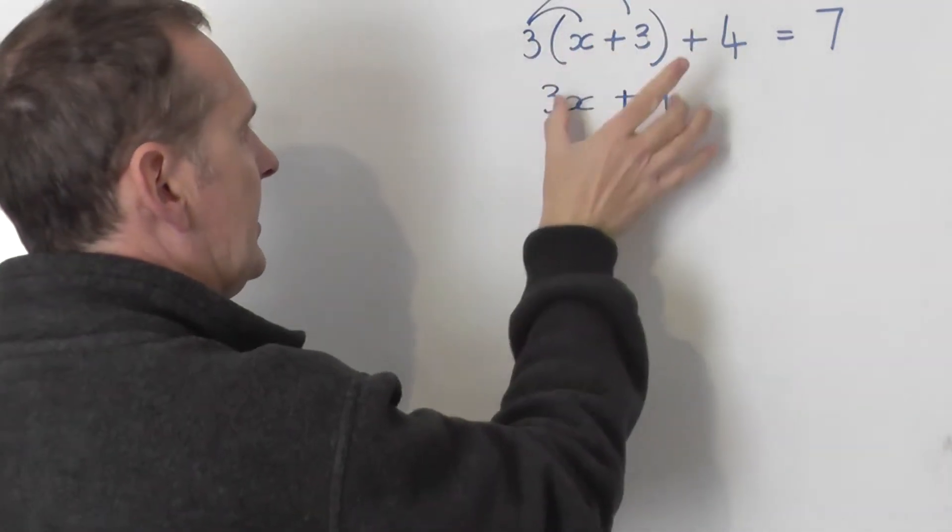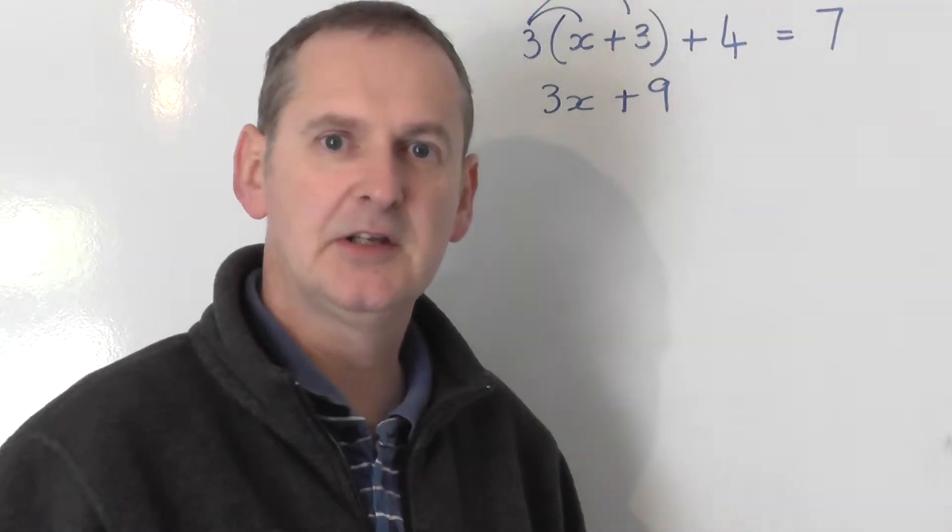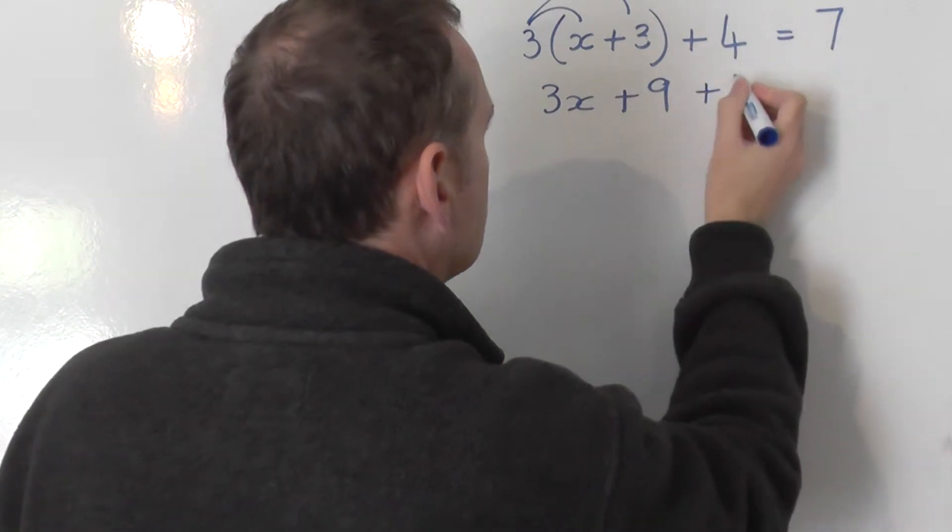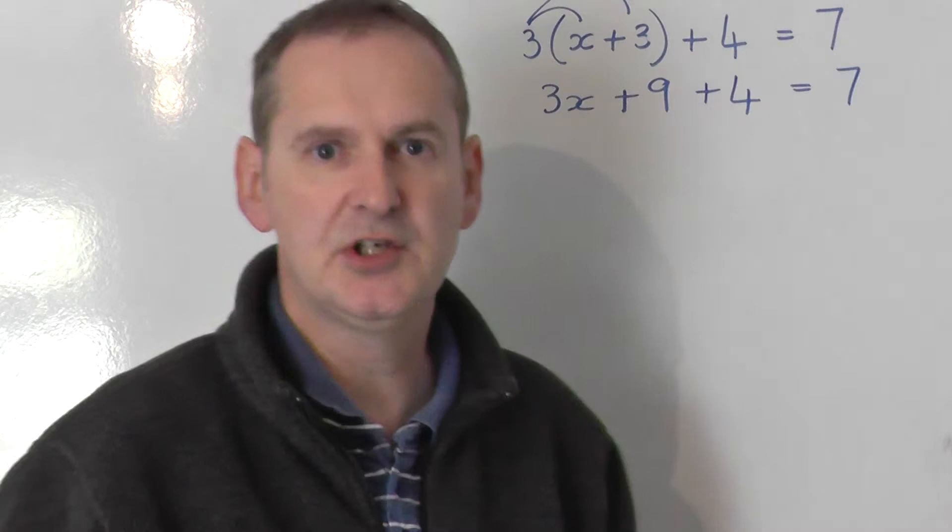So all I'm doing is changing that into that. The rest of the equation doesn't involve a bracket so it remains for the time being totally unchanged. So plus 4, keep it as plus 4, equals 7. Do not change anything yet.